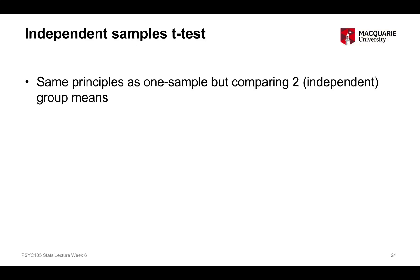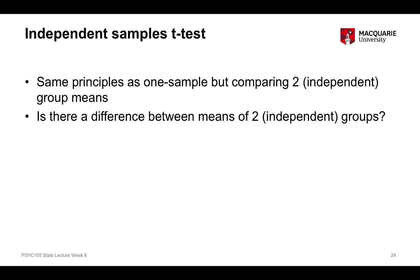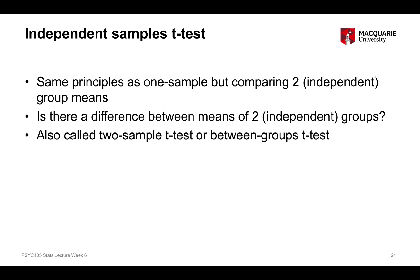The independent samples t-test is relatively similar to the one sample t-test because all t-tests are doing a similar kind of thing. But what it's doing is comparing the mean score on some numeric variable between two independent groups, to see if there's a difference in the mean score between those two groups. It's also called a two sample t-test or a between groups t-test — all of those terms represent the same thing.